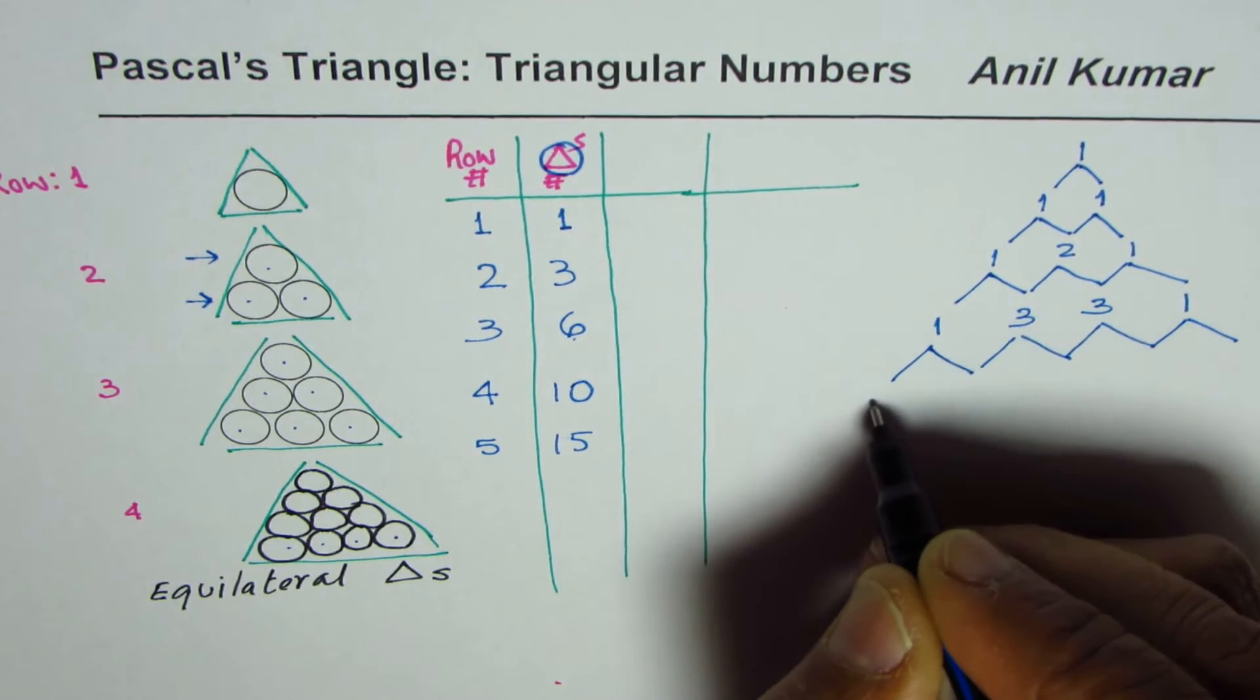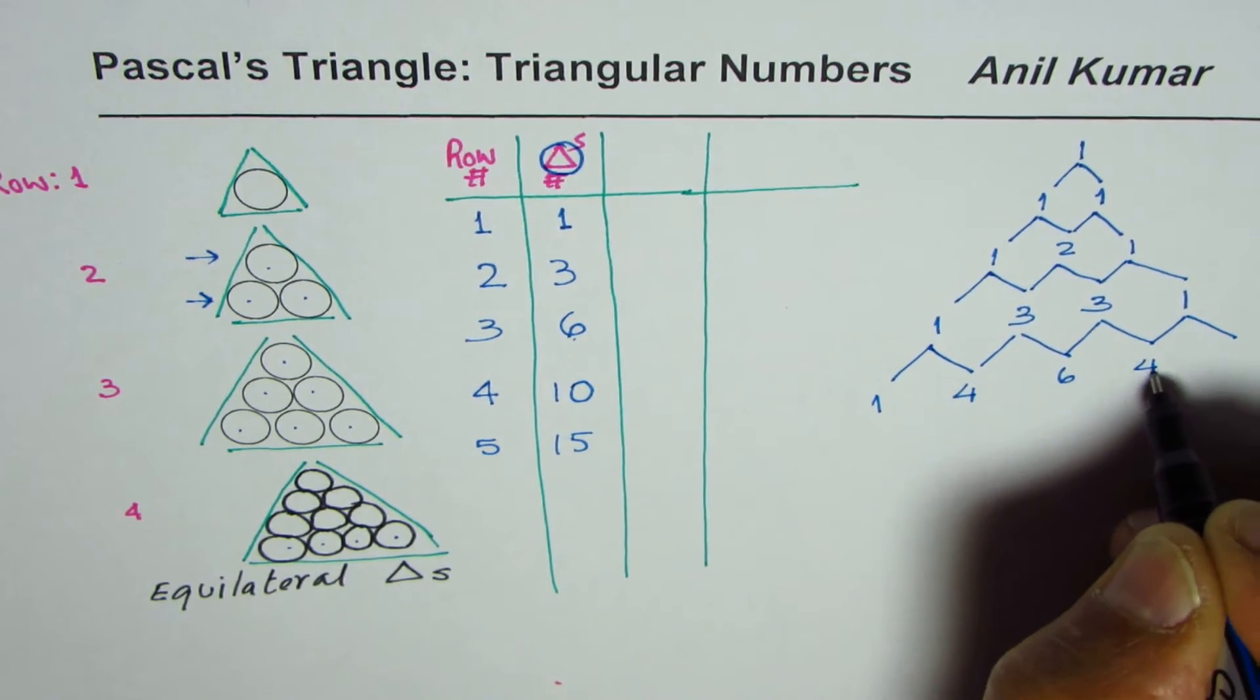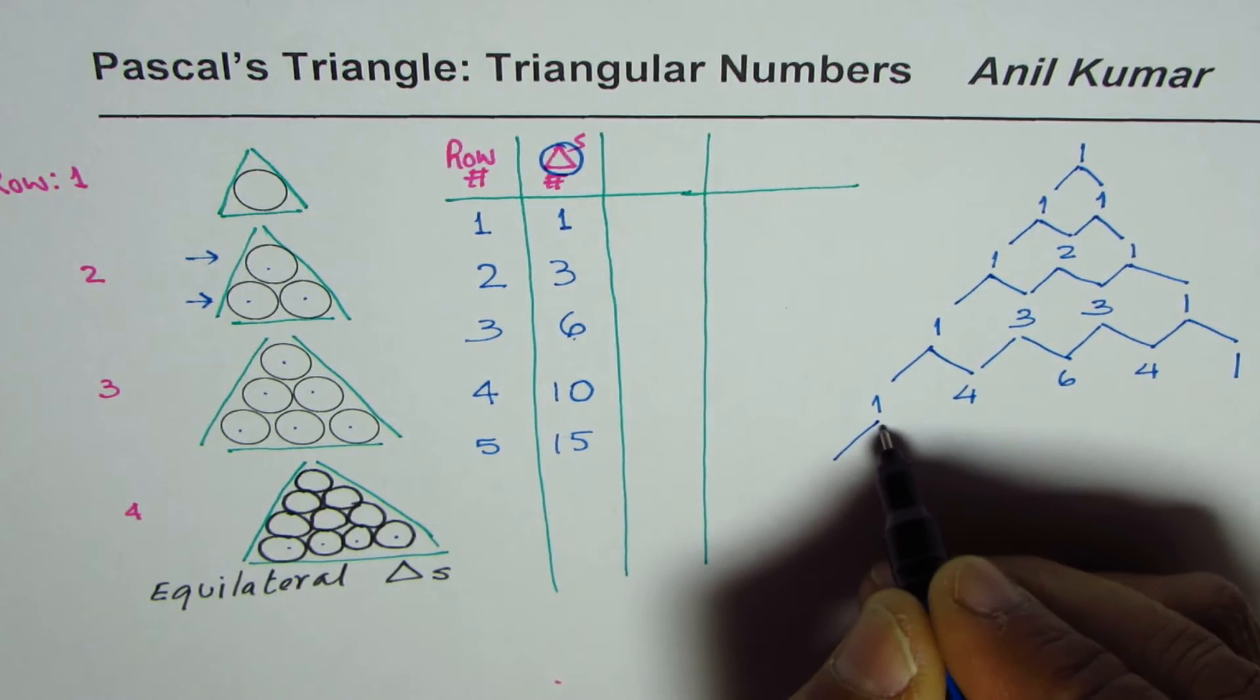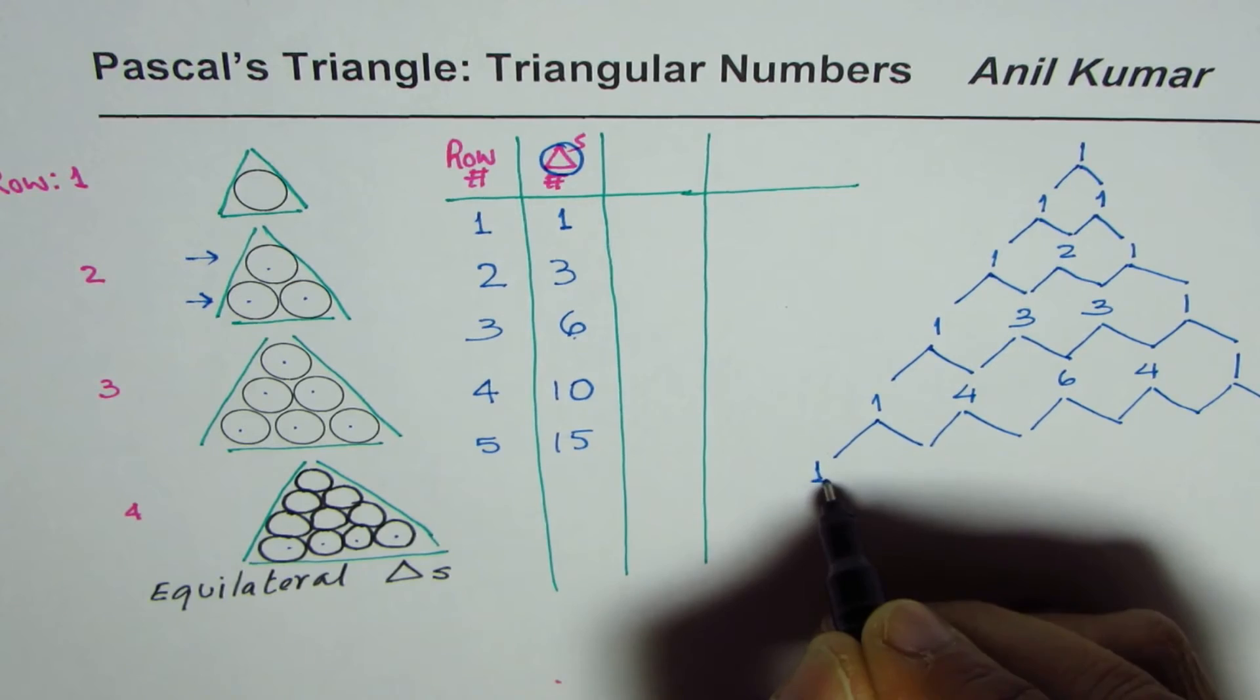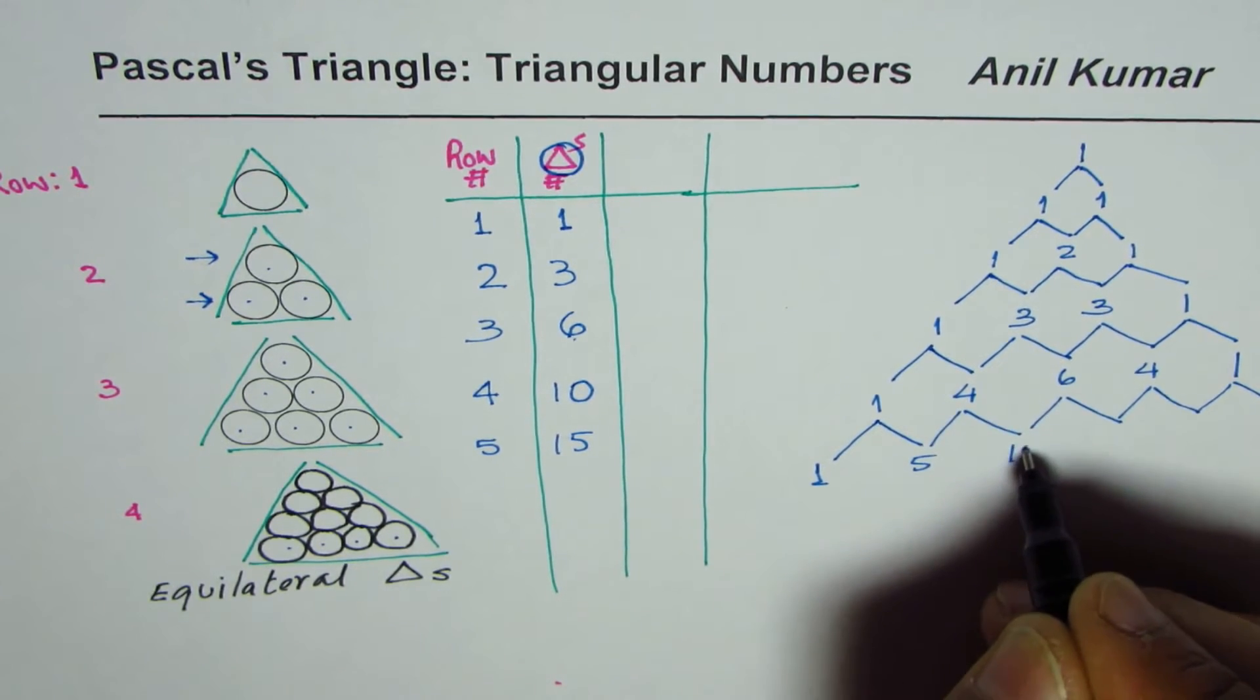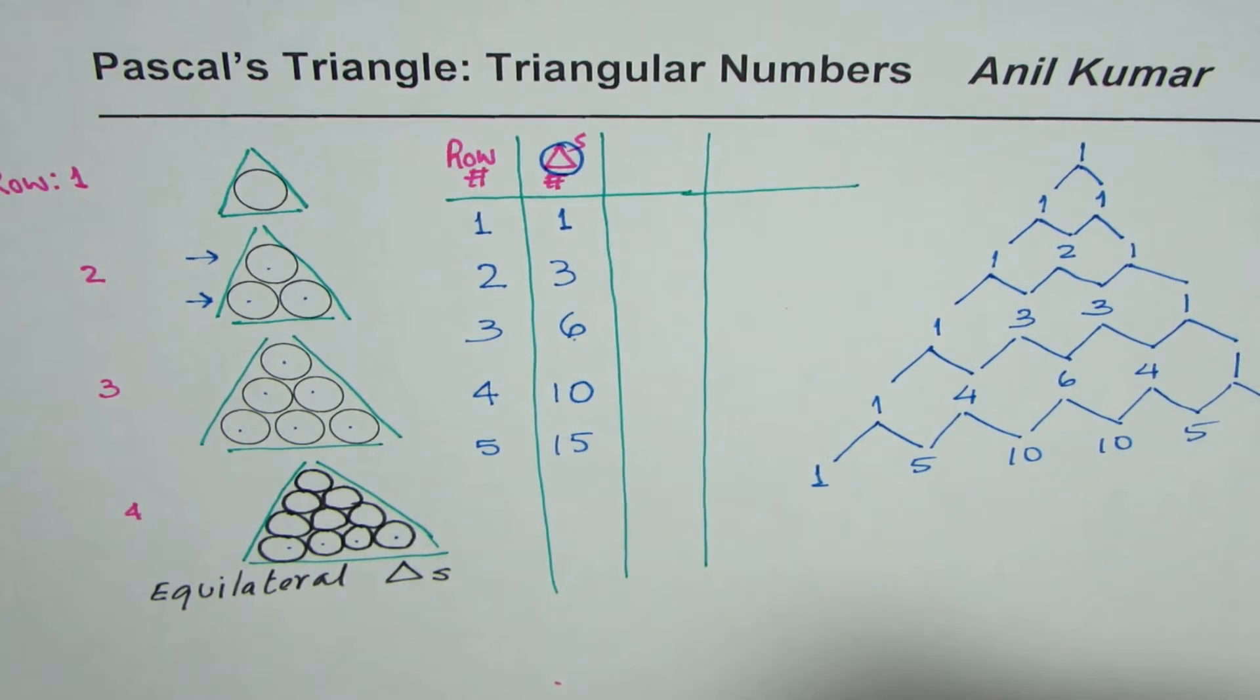So we have one, three plus one is four, six, four and one. And if we increase this, we'll compare with our numbers. Four plus one is five, six plus four is ten, and then five and one.